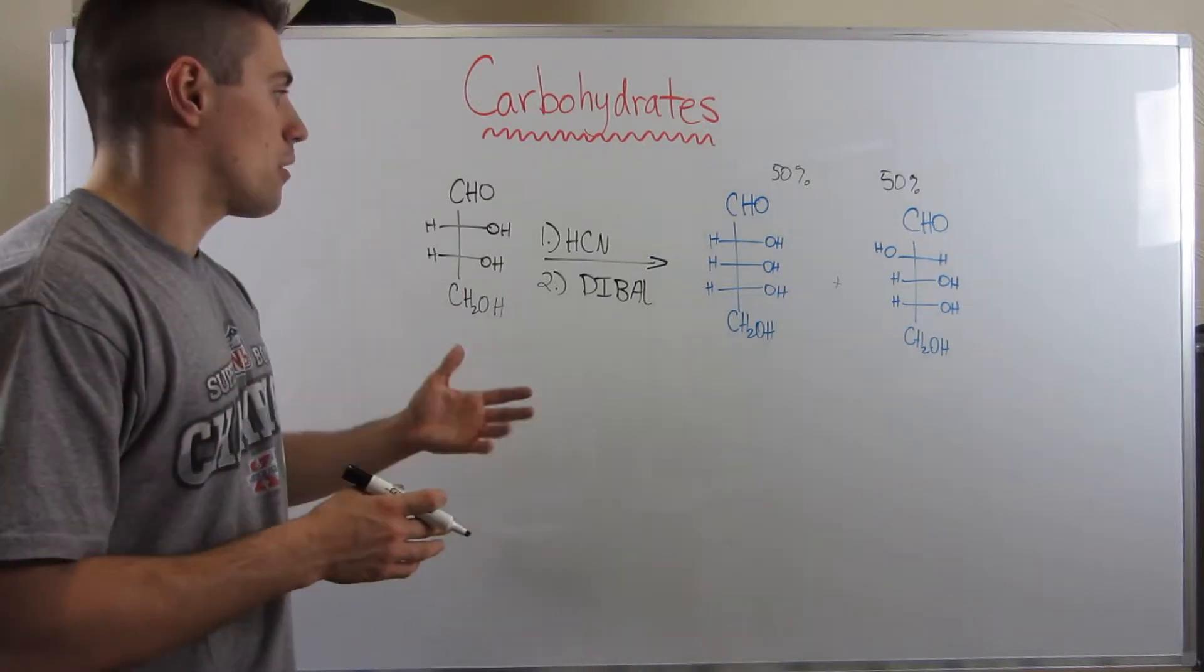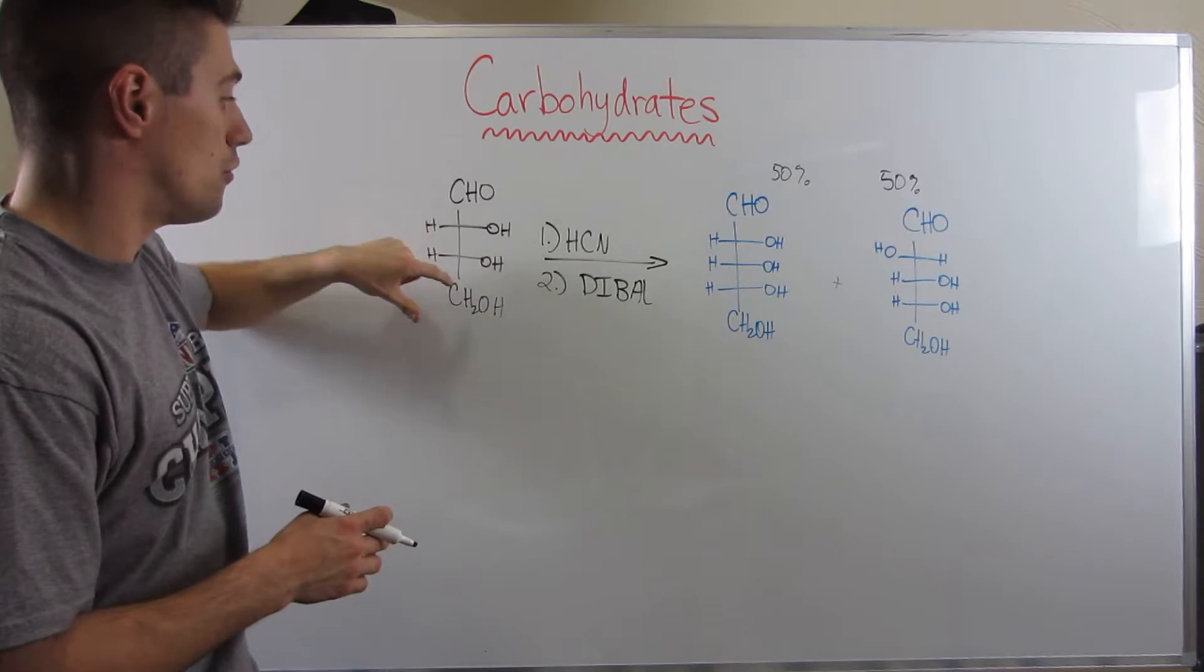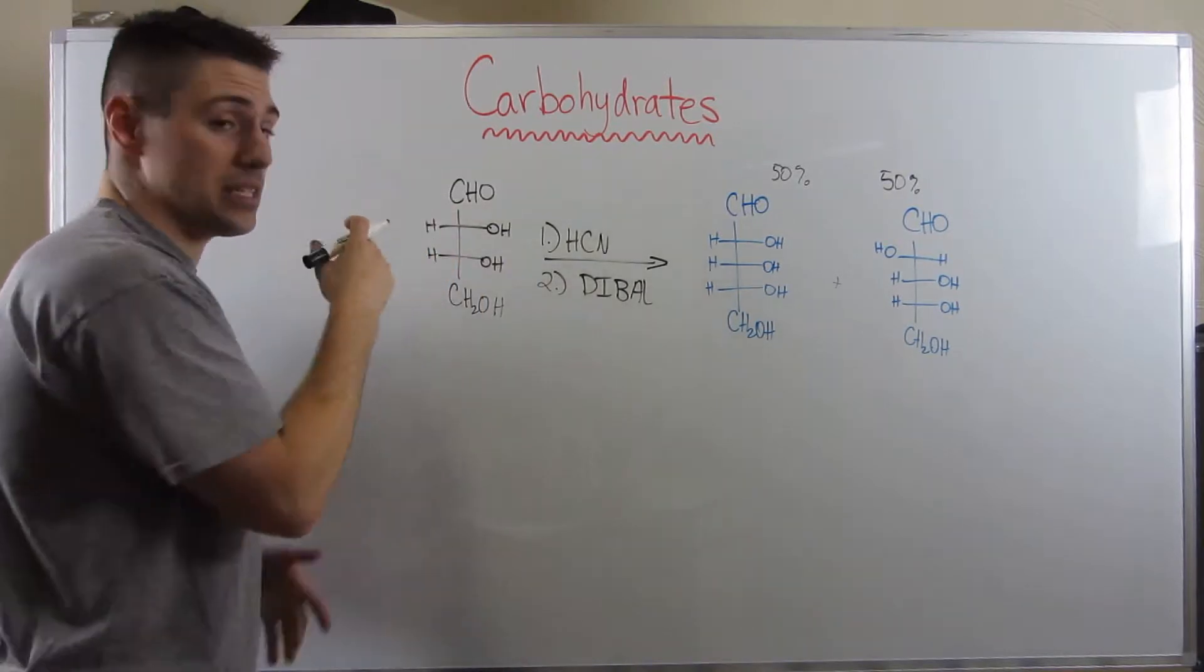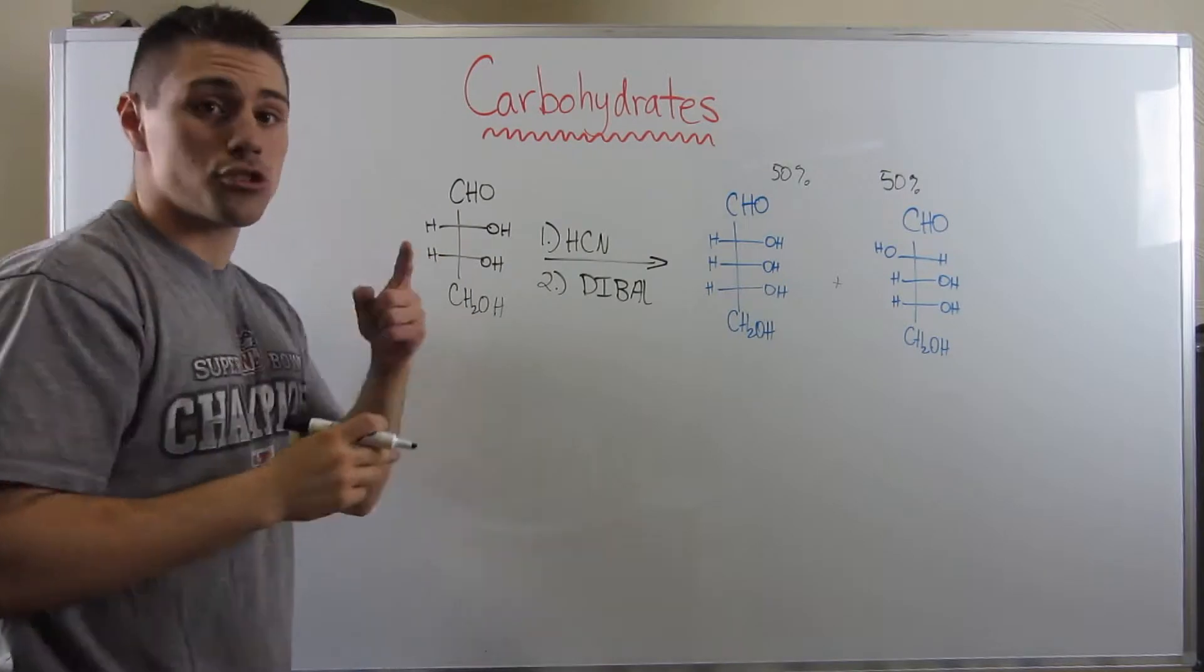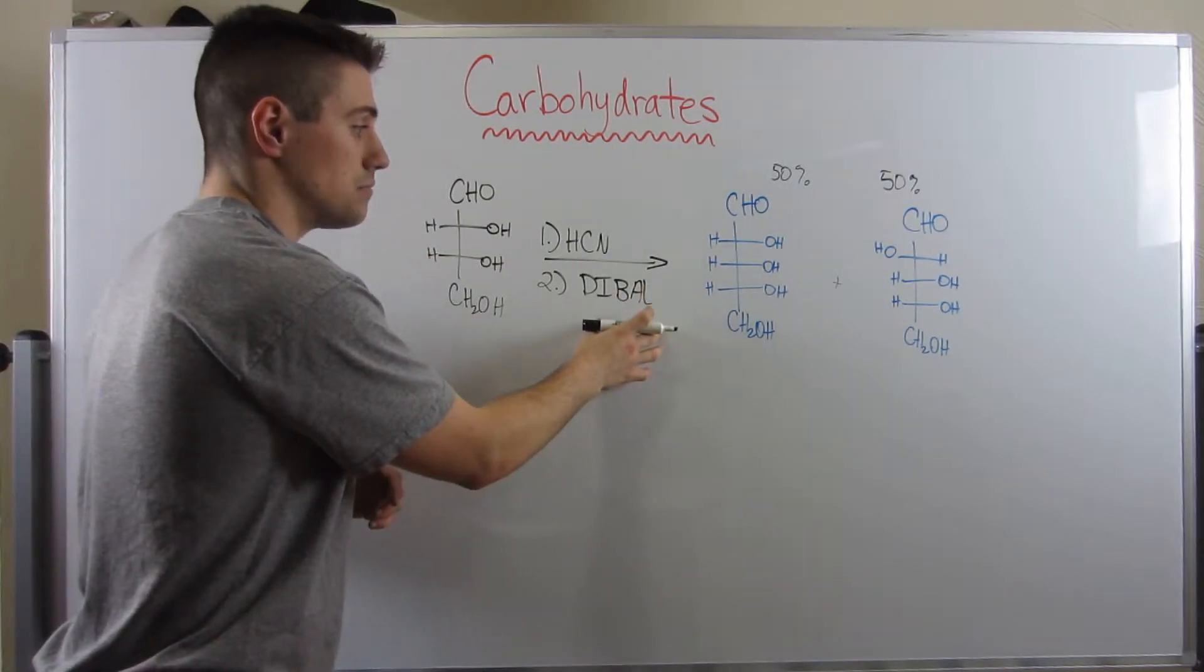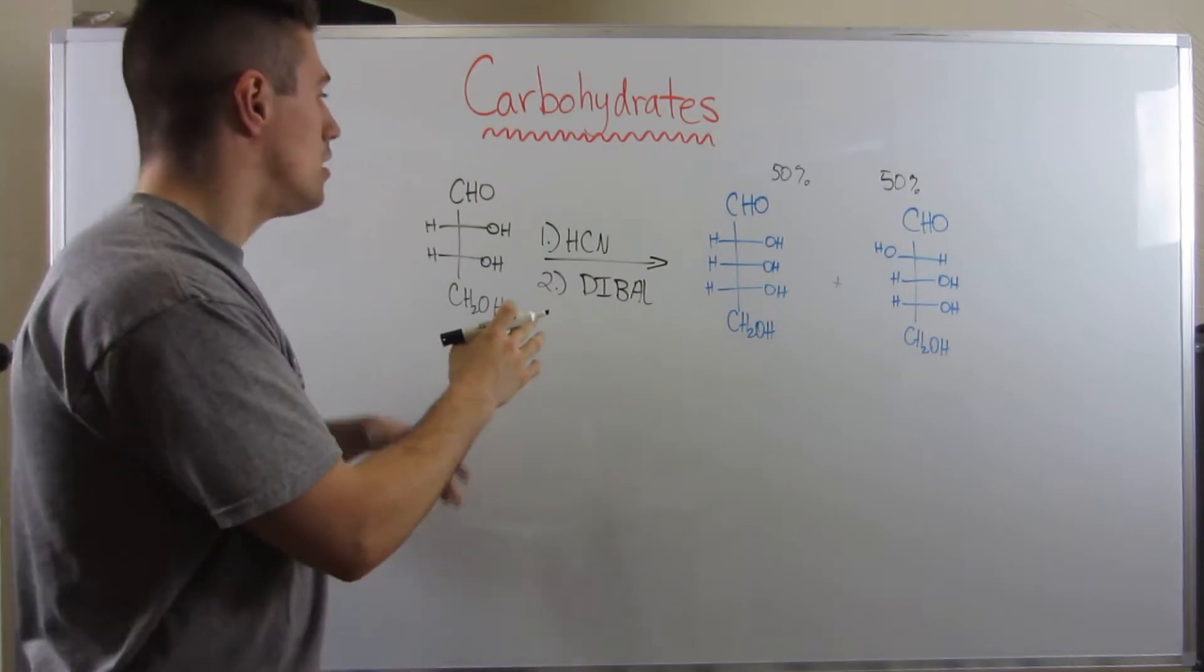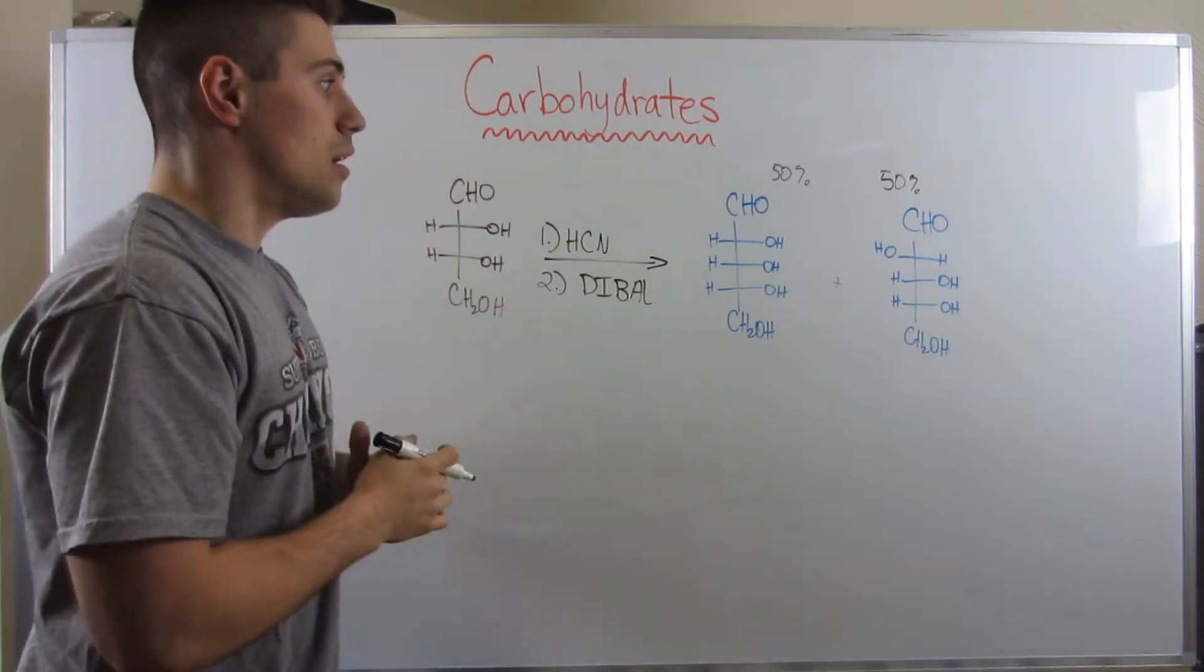So in the previous video, we talked about how we can take a sugar, in this case one, two, three, four carbons long, and if we subject it to some HCN, we'll protonate the carbonyl inside the aldehyde and attack with CN-, lengthening our chain by one. And then we can use diisobutyl aluminum hydride, sorry had a major brain fart, diisobutyl aluminum hydride to reduce that newly added nitrile to an aldehyde.